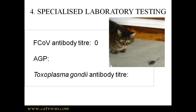Our next step is to test for antibodies against Toxoplasma gondii, and although FIP is very unlikely, it would give his guardian peace of mind to confirm it was absolutely ruled out. His feline coronavirus antibody titer was checked at Glasgow University's Veterinary Diagnostic Services laboratory and it was less than 1 in 10, which is considered negative. His alpha-1 acid glycoprotein level was normal. However, he had a high antibody titer for toxoplasma.